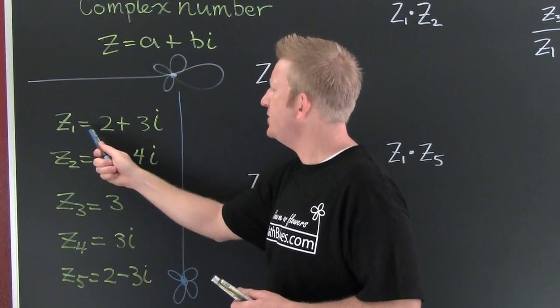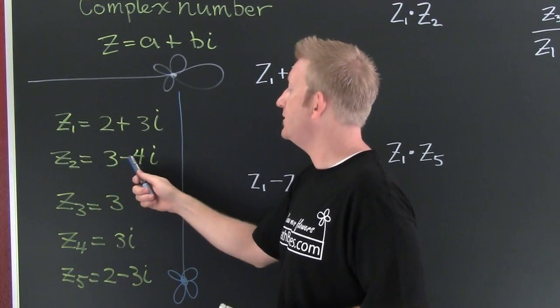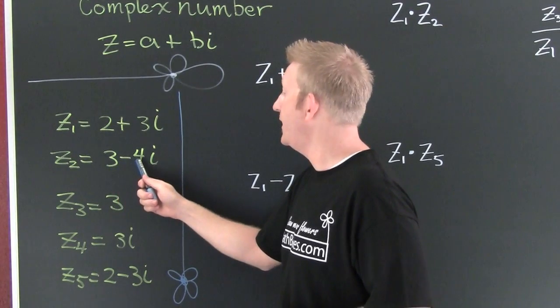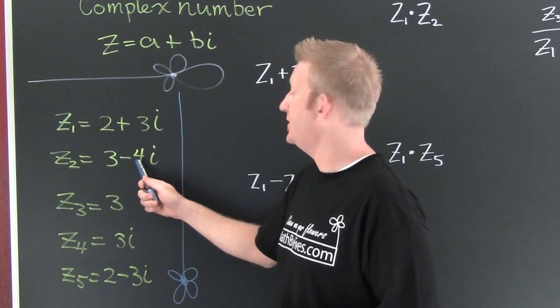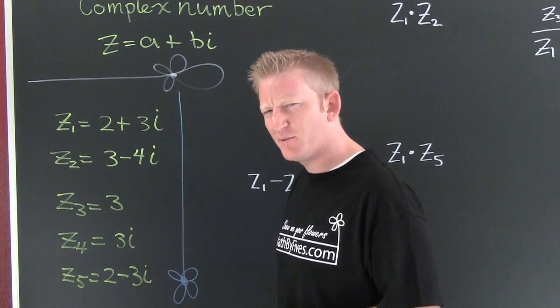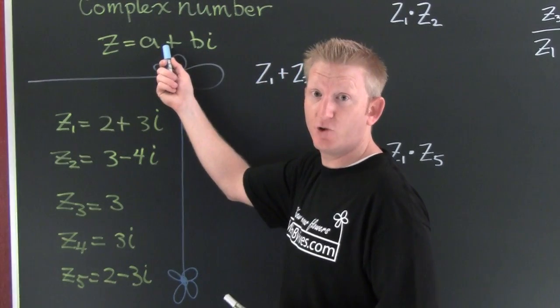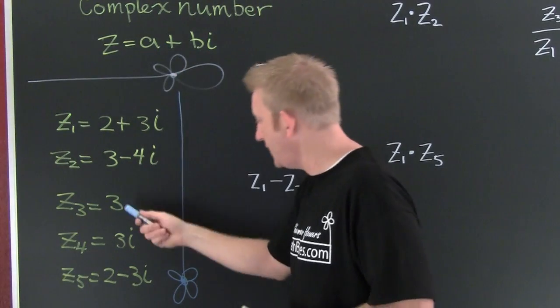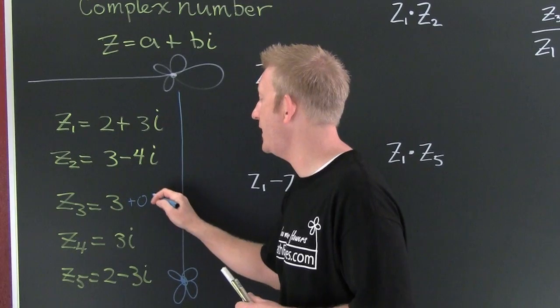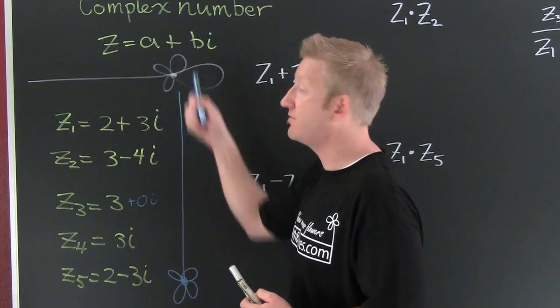I have five complex numbers. z1 is 2 plus 3i, where 2 is the real part and 3 is the imaginary. z2 is 3 minus 4i, where 3 is the real part and minus 4 is the imaginary part. z3 is 3. Is that complex? A complex number is any number that can be written in this form. Yes, you can see this as 3 plus 0i. Because I can put it in this form, it's complex.